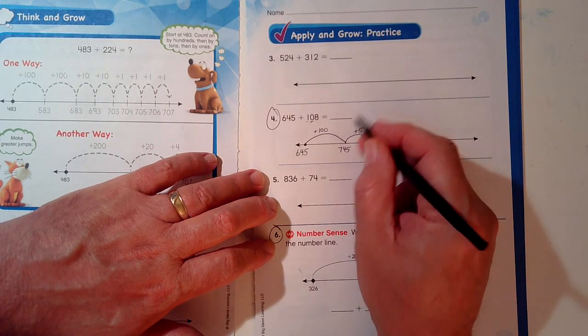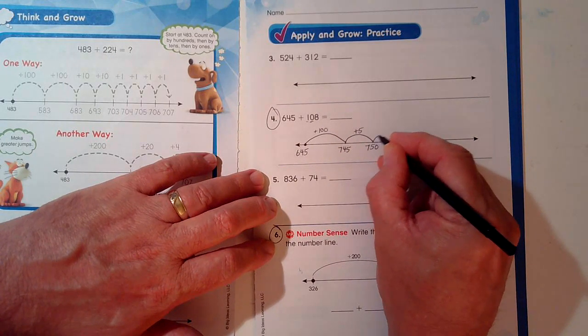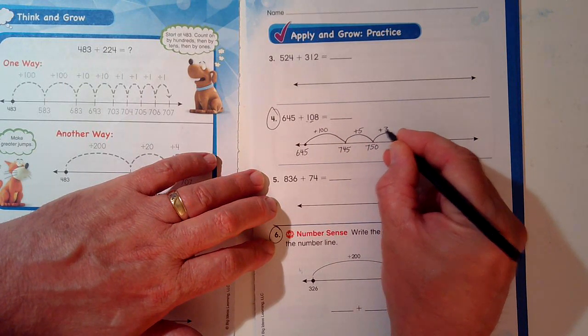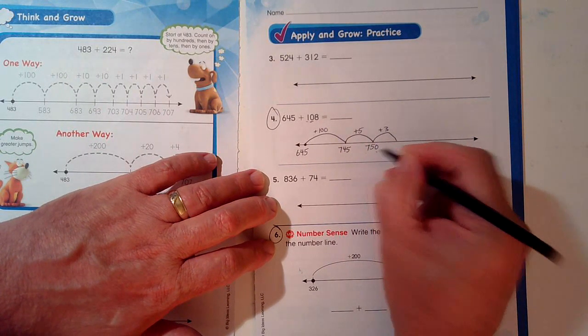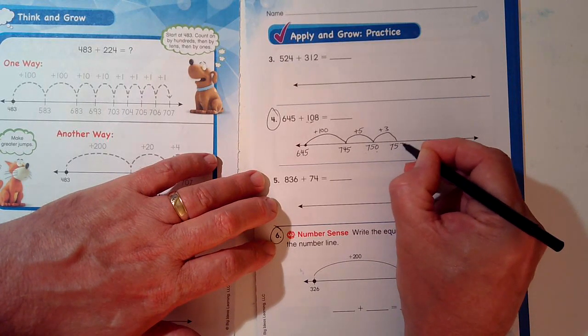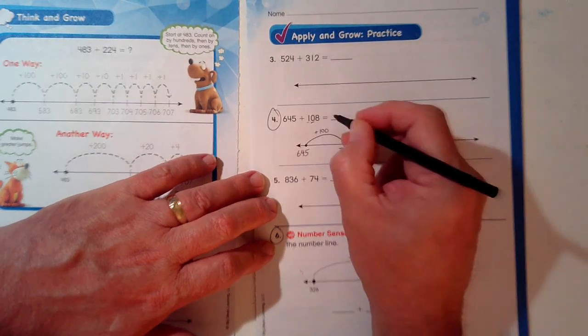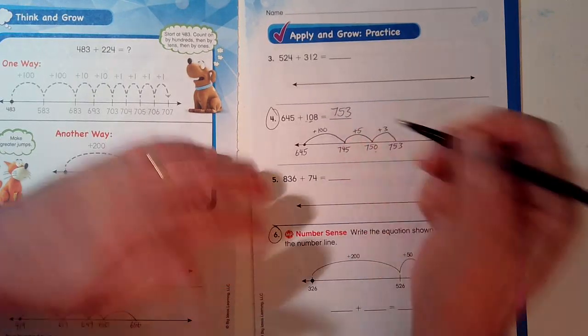If I have eight, and I used five, I know that I have three left. 750 plus three more, 753. Okay? 753.